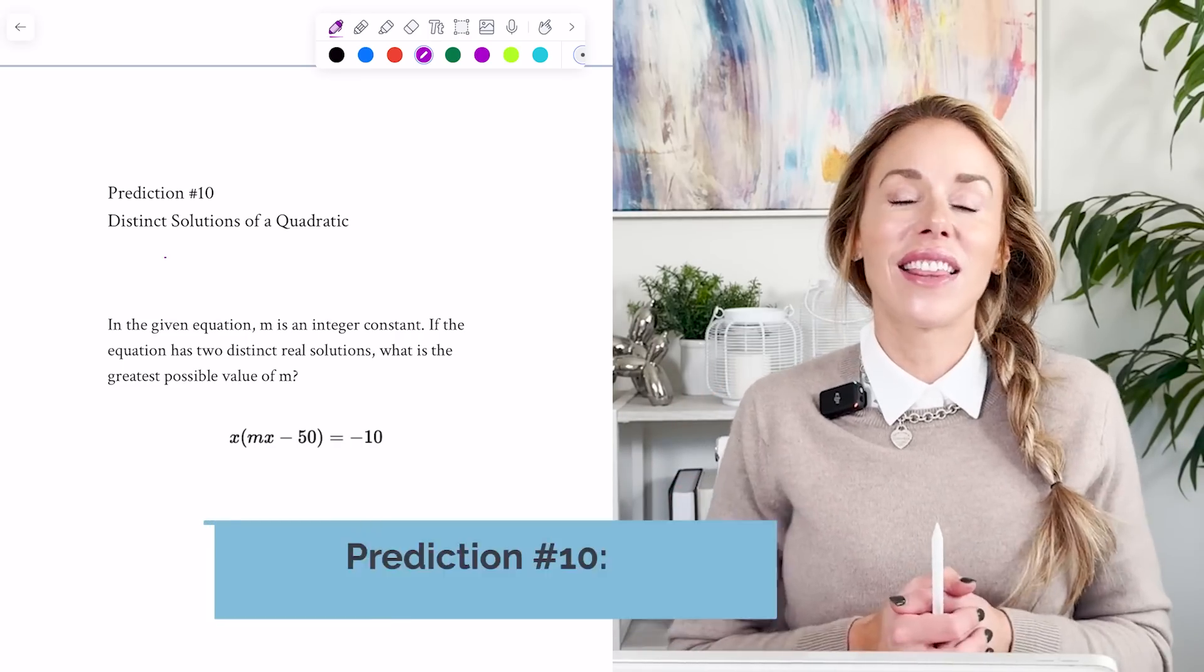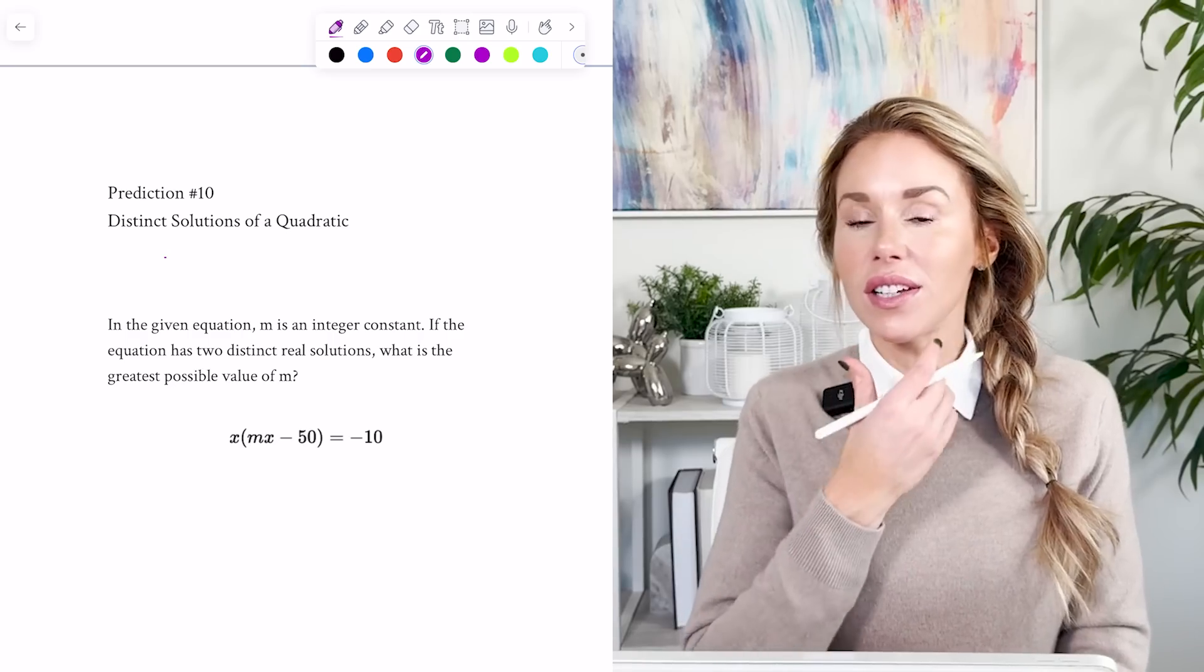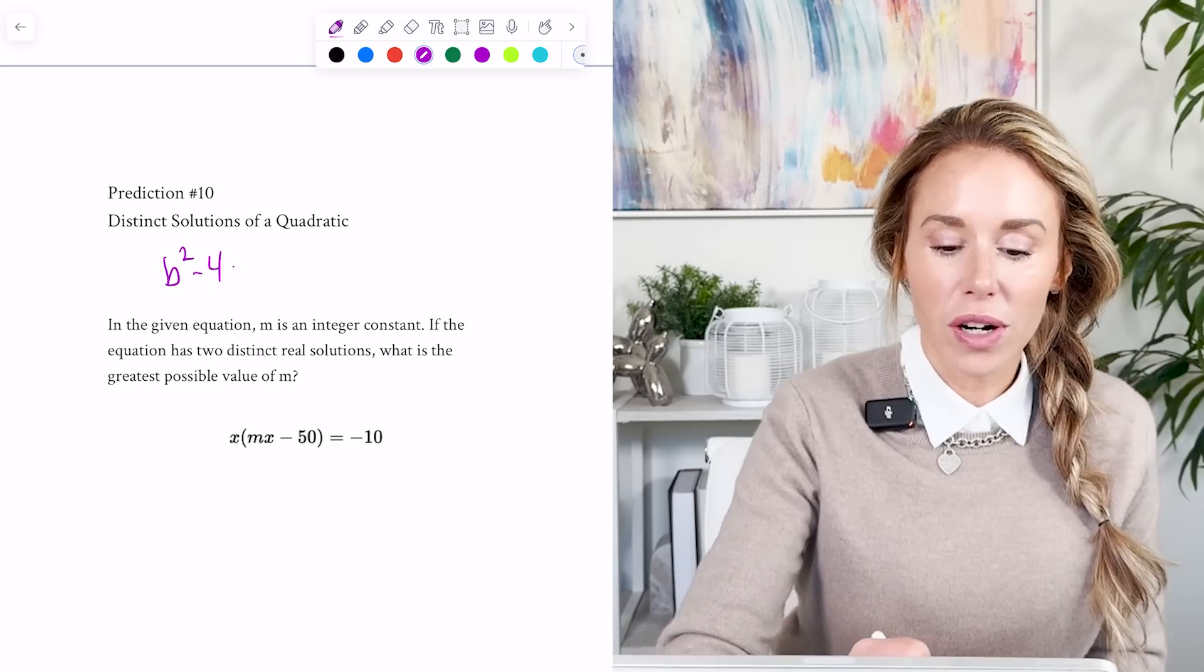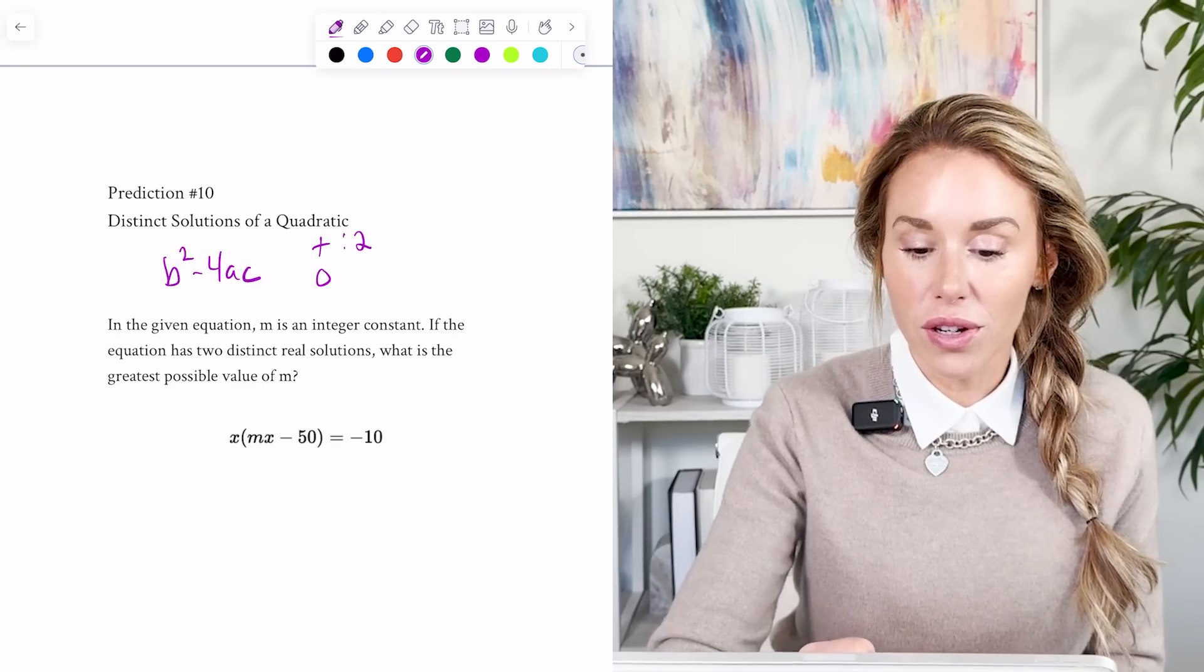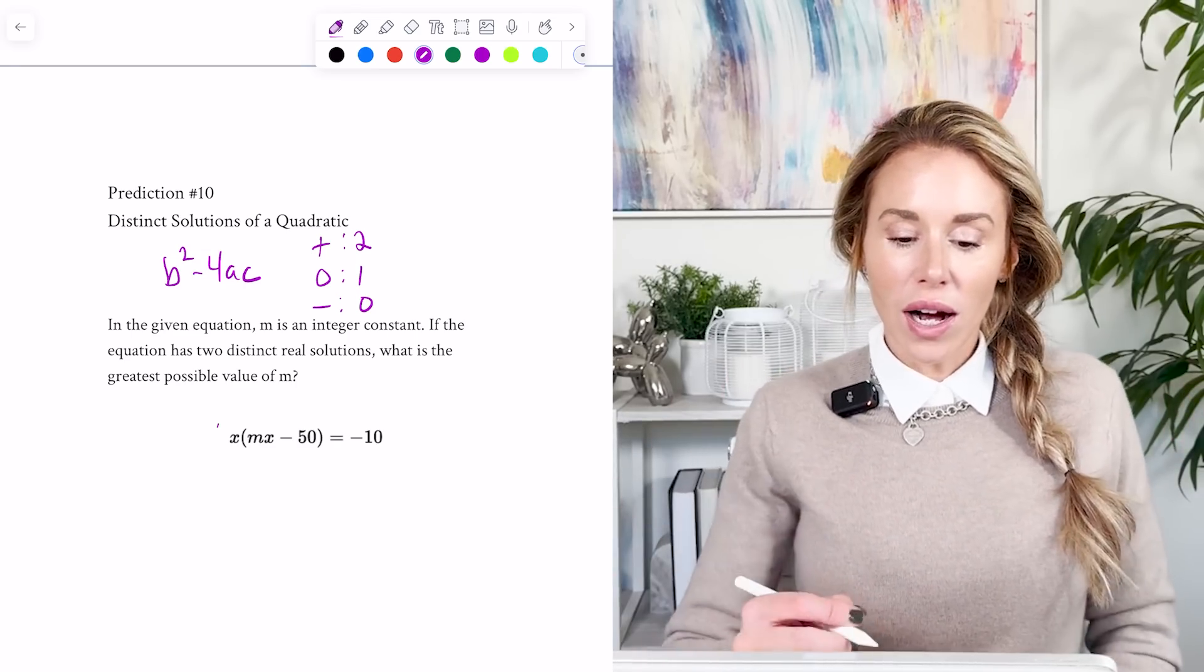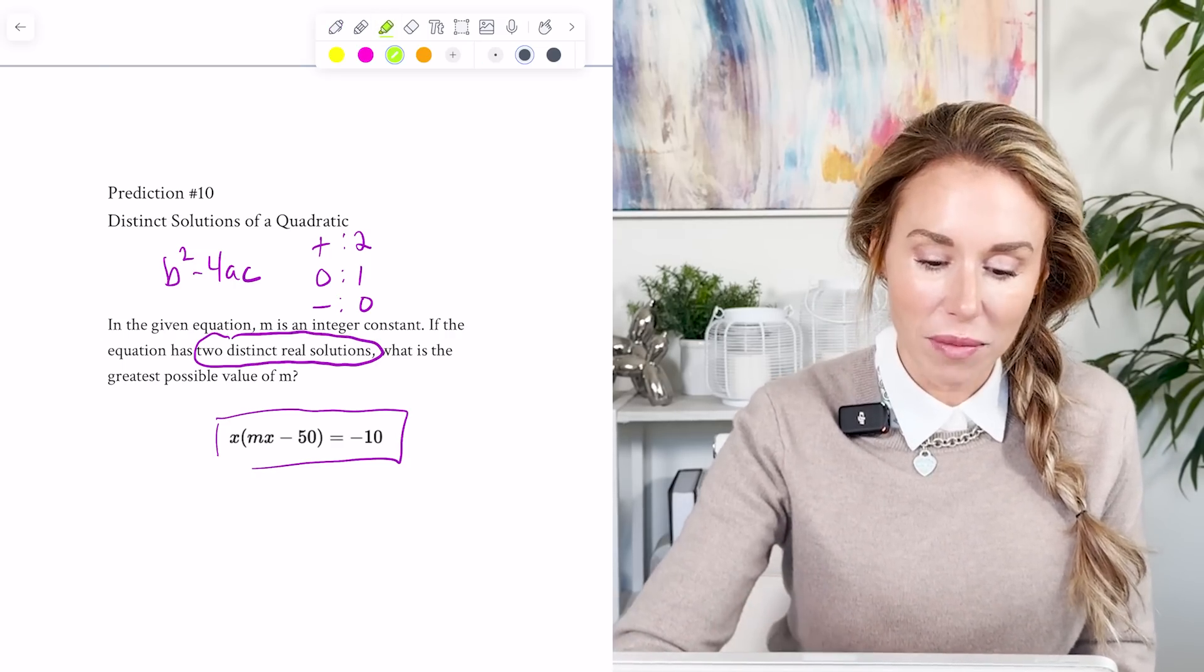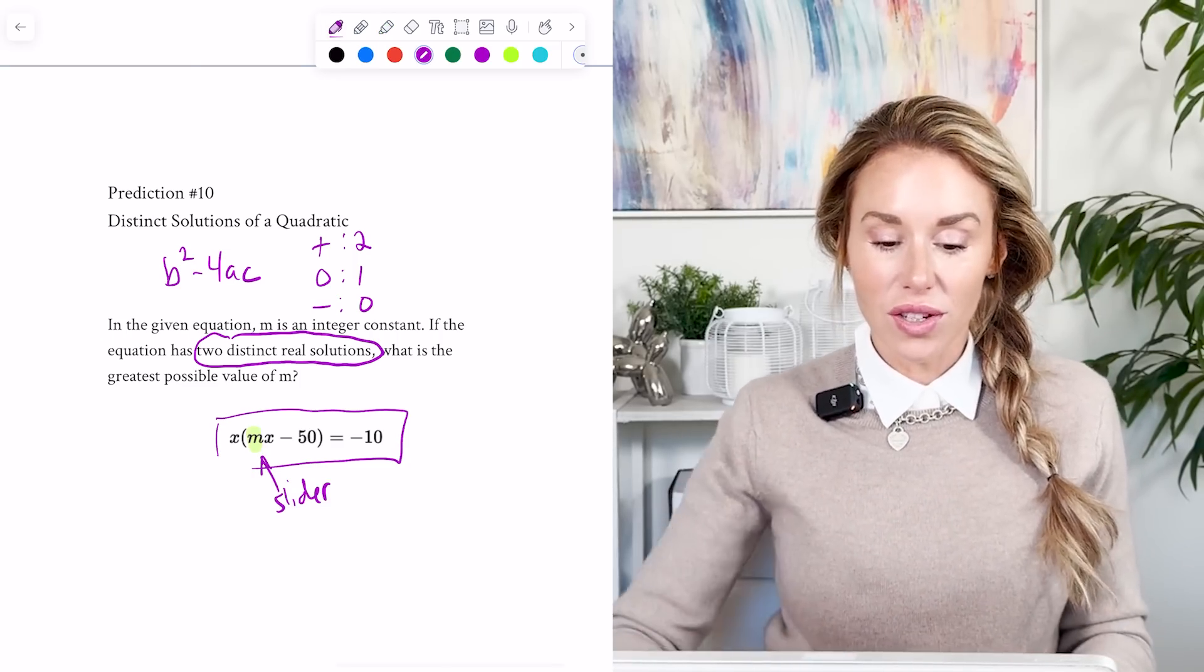All right, my last and final prediction is that they will ask about the distinct solutions of a quadratic. Now, one thing to understand about distinct solutions of a quadratic is where the quadratic crosses the x-axis and how many times. Now, you can use the discriminant, which is b squared minus 4ac, to figure that out. If it's positive, you'll have two solutions. If it's zero, you'll have one solution. If it's negative, you'll have zero solutions. But you can also take this equation and type it into Desmos. If they say there's two distinct real solutions, we're going to have a slider for m, because that's our constant, and we're just going to move it around until we have two distinct real solutions. So let me demonstrate.